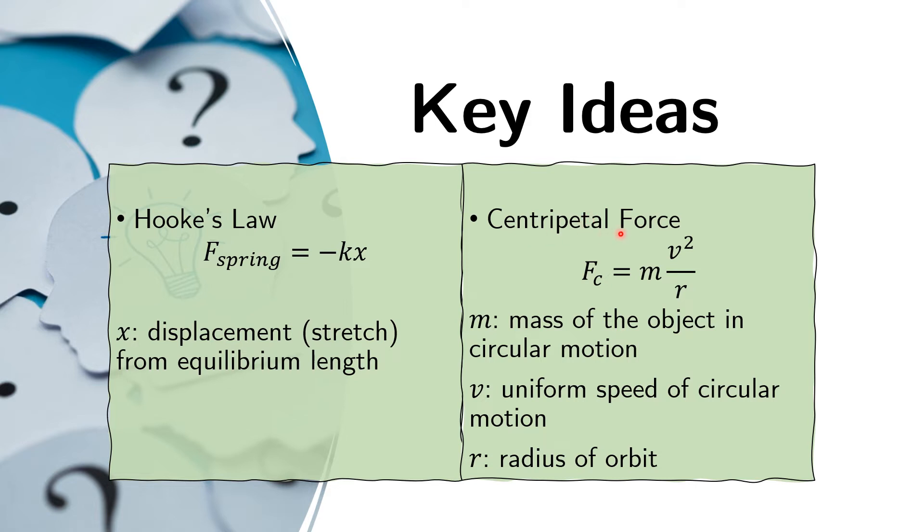Here we have this as the centripetal force. It is proportional to the mass of the object and the square of the speed of the object. So this is linear speed in meters per second. And it's inversely proportional to the distance from the center of the orbit.